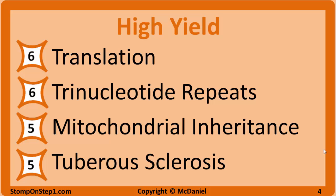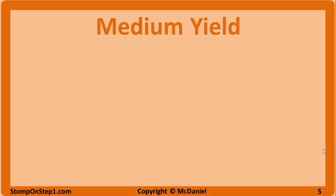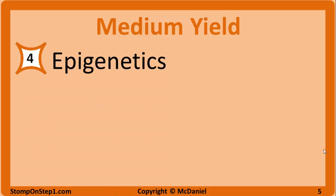Another topic with a high yield rating of 5 is tuberous sclerosis. You want to know how it presents and what conditions are associated with it. Now we're getting into more of the medium yield topics. With a high yield rating of 4, we have epigenetics — know the general definition, how it works, and different types of changes to DNA and histones, such as methylation and acetylation.